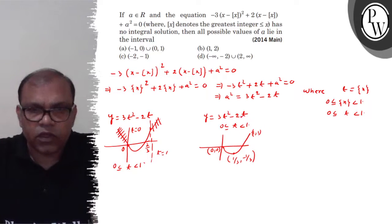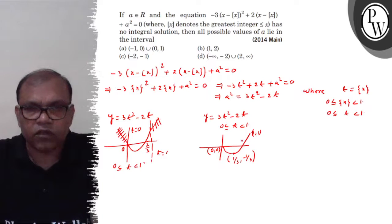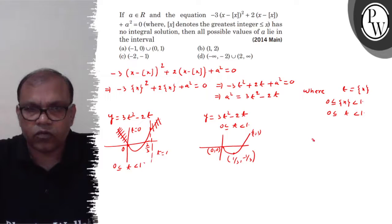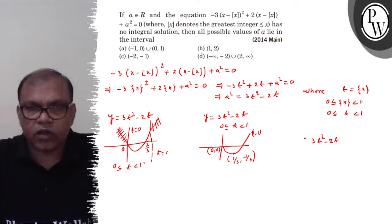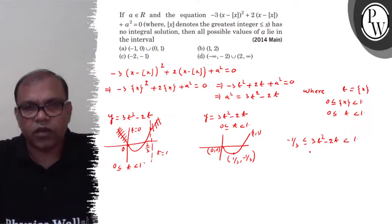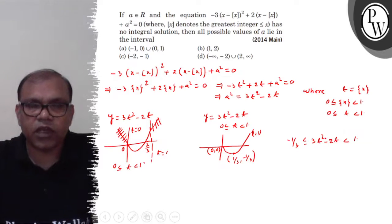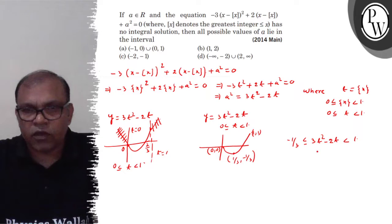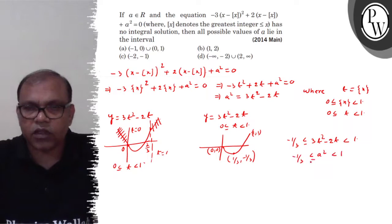तो 3t² minus 2t की जो value लाई करेगी, वो लाई करेगी minus 1/3 से लेके 1 तक। अब 3t² minus 2t की value a² के equal है, तो a² की जो value होगी वो minus 1/3 से लेके 1 तक लाई करेगी।